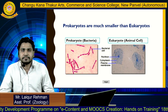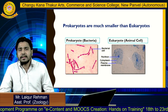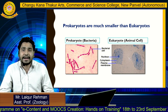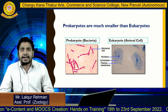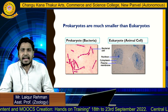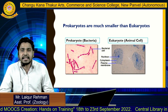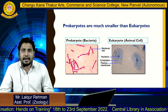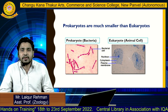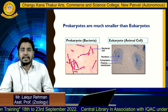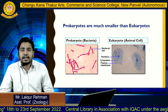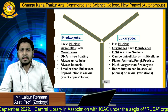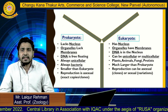Moving forward, prokaryotes are much smaller compared to eukaryotes. Prokaryotes are bacteria. In this diagram you can see the bacterial cell, which is much smaller compared to the eukaryotic or animal cell. In the animal cell diagram you can see the nucleus, cytoplasm, and plasma membrane.